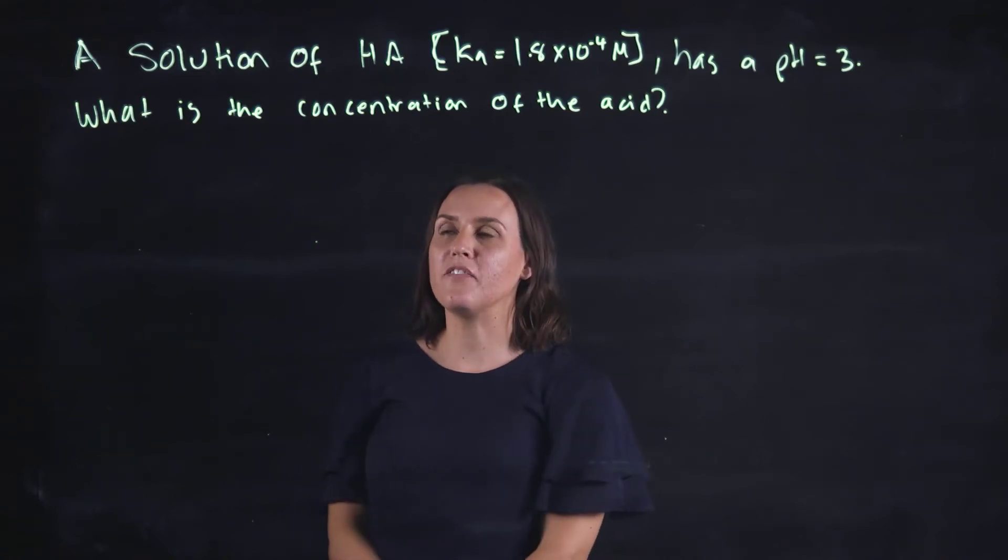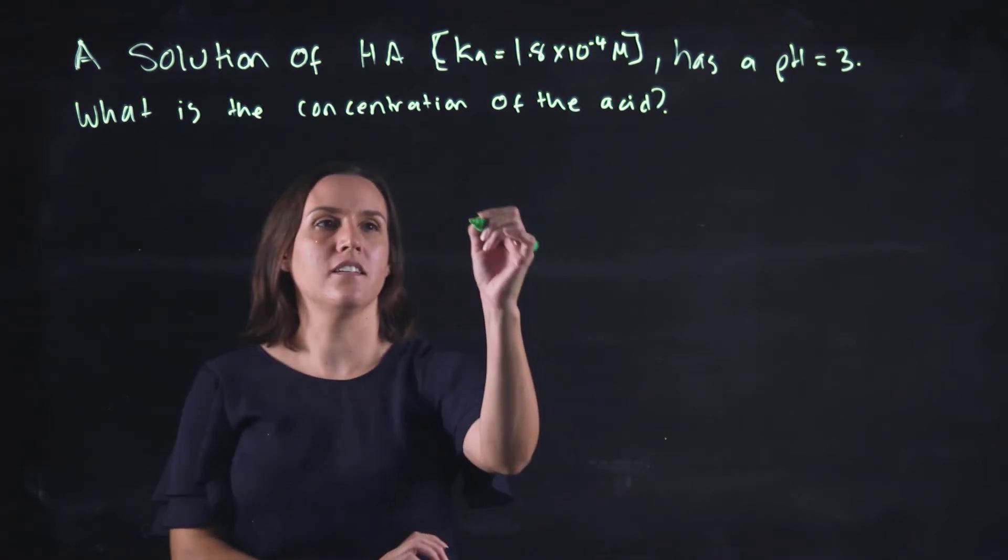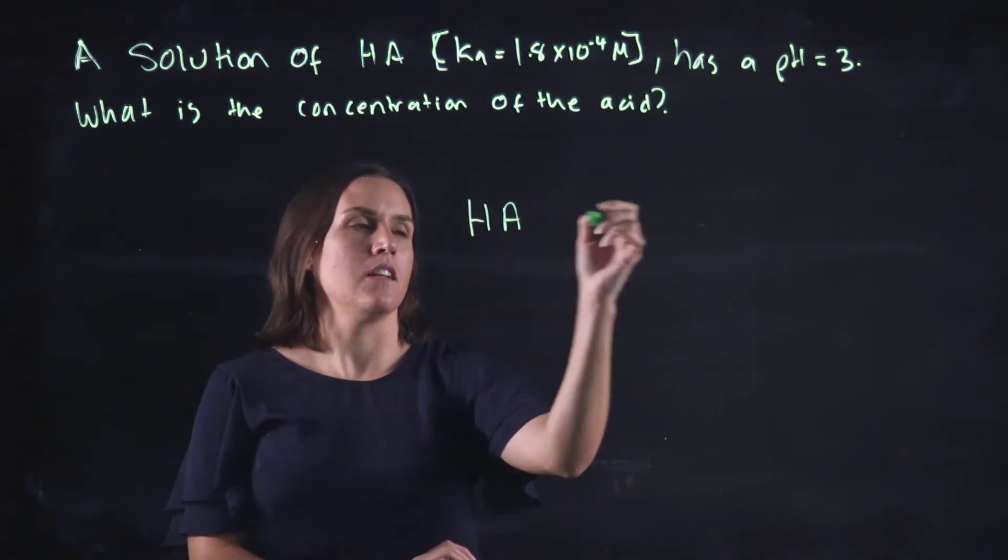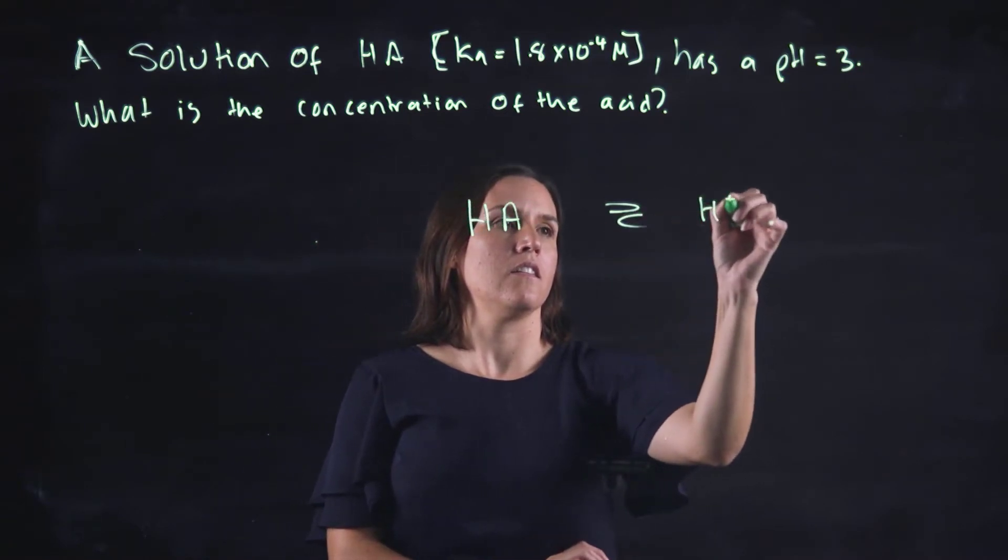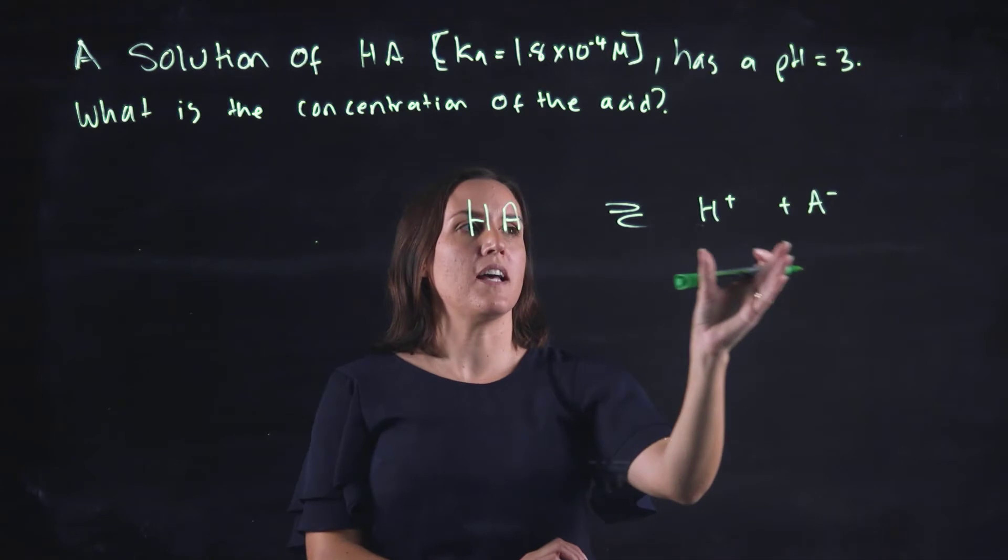Hi, welcome back. This is another video about weak acids. This one here we're given a weak acid, HA. When it dissociates, it forms H+ and A-.